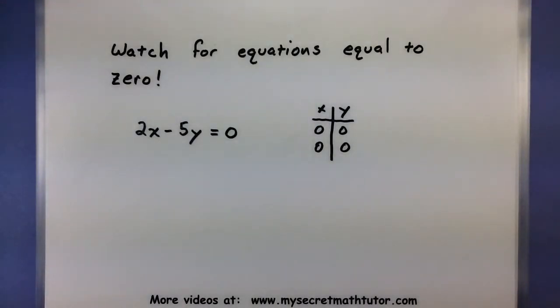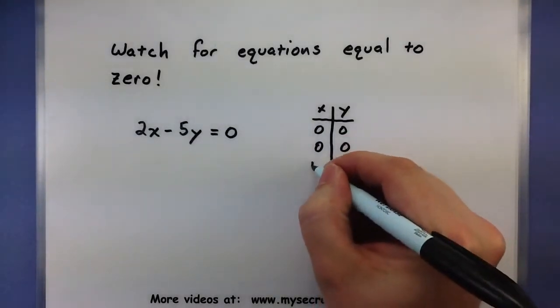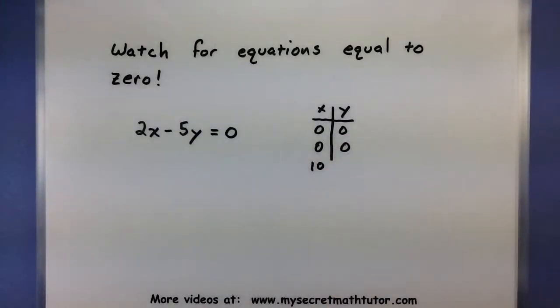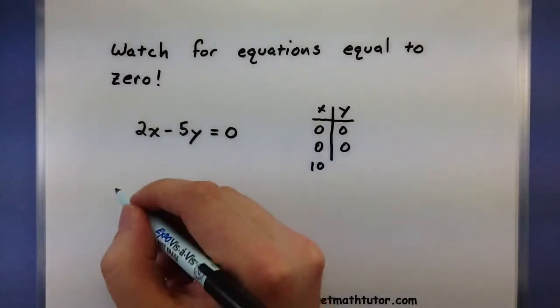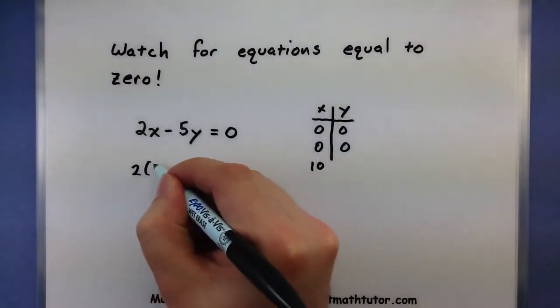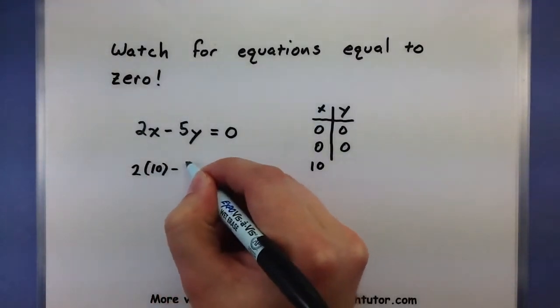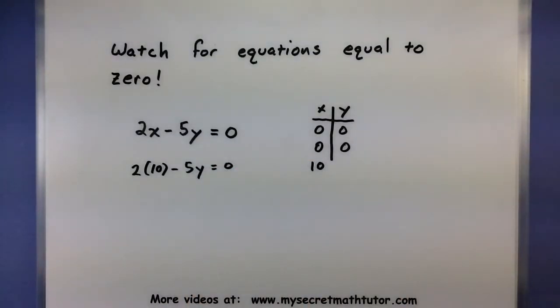Well the workaround that you can do is basically simply use a different point. So plug in something other than 0 for one of your variables, and see what the other one has to be. So this time I'm going to plug in 10 for x, and have to do a little bit more work, but it'll be okay.